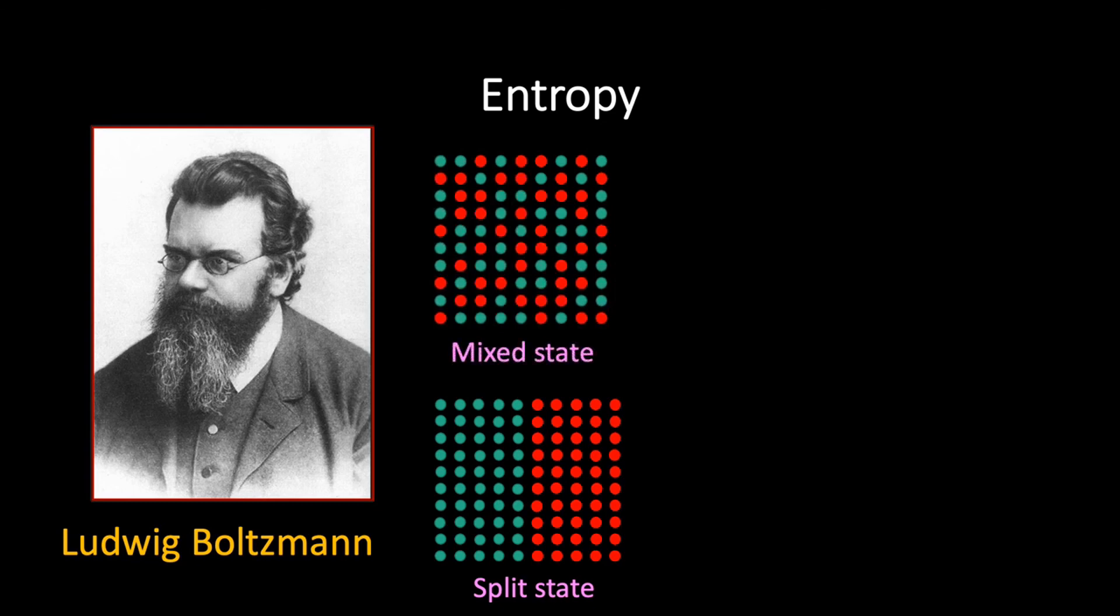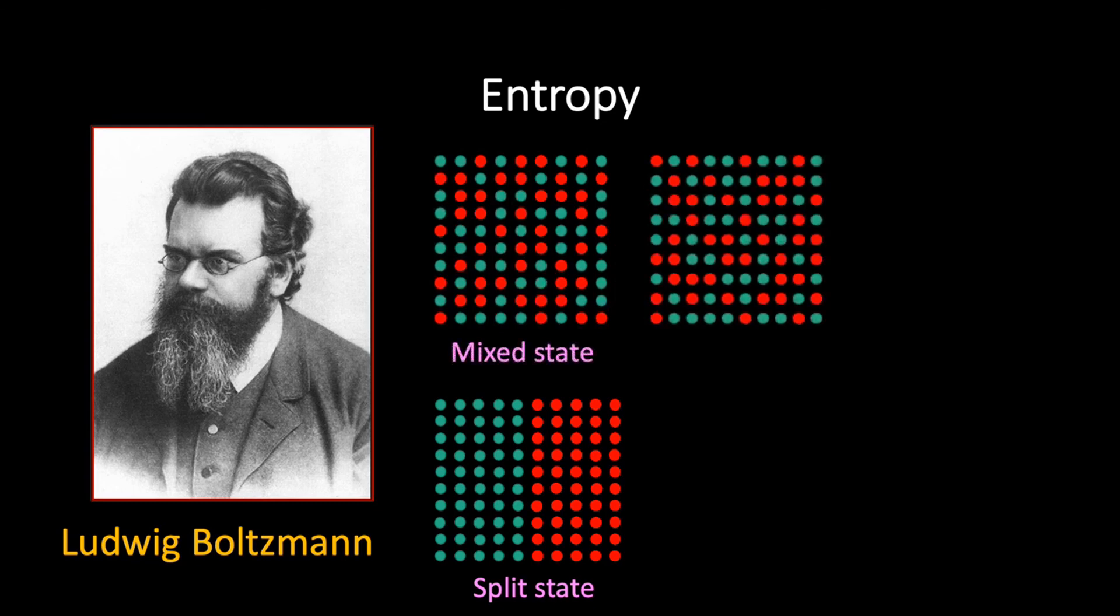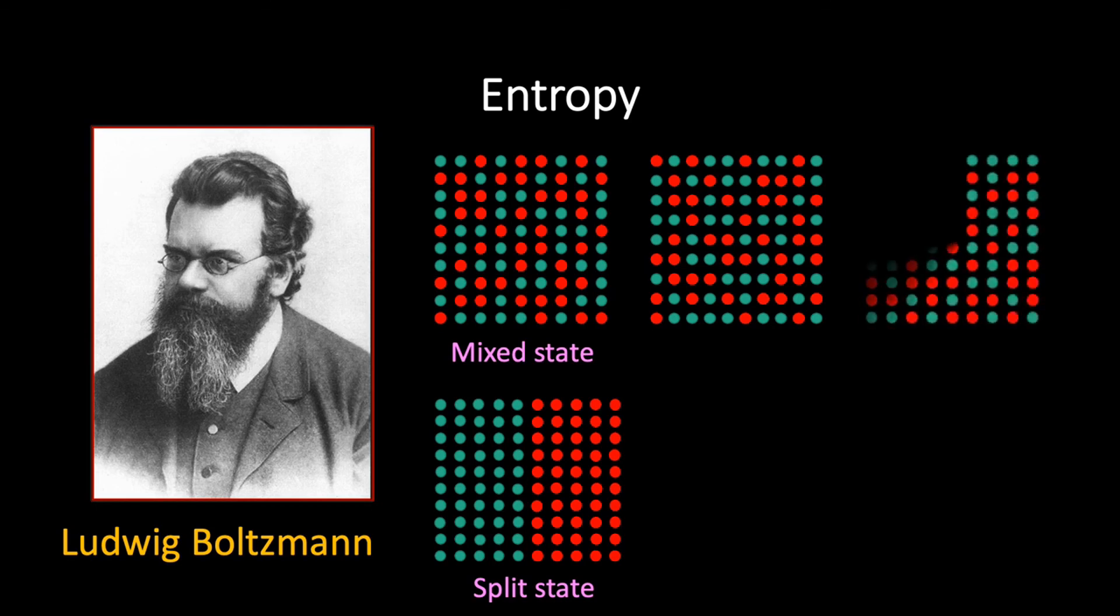If we then shook the box again, we would get a different arrangement of the marbles, but we would still label the macrostate of the system as being mixed. In fact, there are a huge number of marble configurations or microstates corresponding to a mixed macrostate. On the other hand, there are clearly fewer ways for the marbles to arrange themselves into the neatly separated split state.